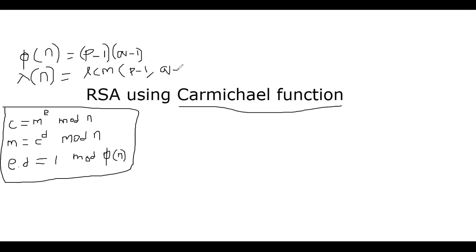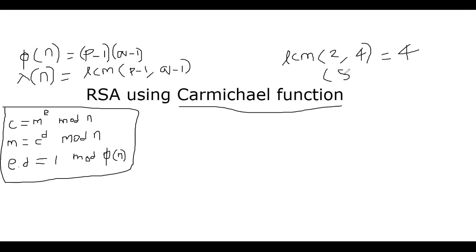Suppose you have two numbers, say 2 and 4. The LCM is the least common multiple — the smallest number that can be expressed as a multiple of both. Obviously, the smallest such number is 4: it equals 4 × 1 and also 2 × 2. What about LCM of 8 and 12? That's 24, because 24 = 3 × 8 and also 24 = 2 × 12. That's the definition of LCM by example.